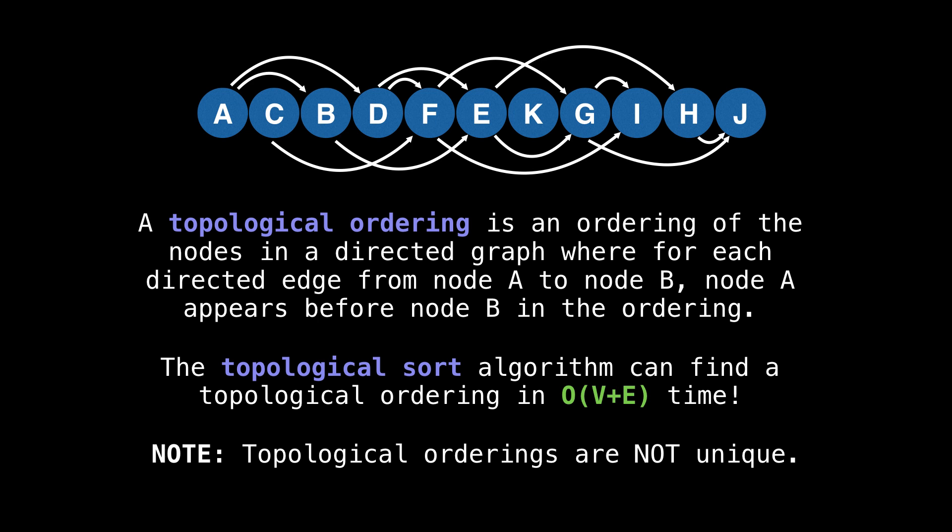So in conclusion, top sort is an algorithm which will give us a topological ordering on a directed graph. A topological ordering is an ordering of nodes for which each edge from node A to node B, node A appears before node B in the ordering. If it helps, this is just a fancy way of saying that we can align all the nodes in a line and have all the edges pointing to the right.